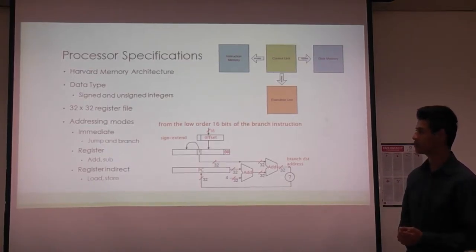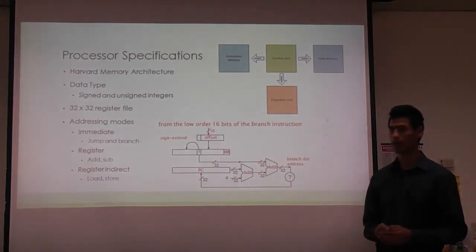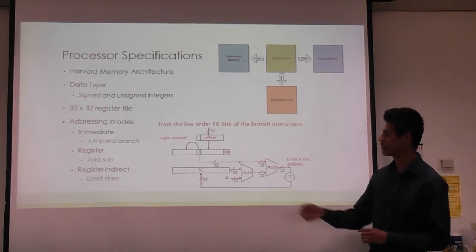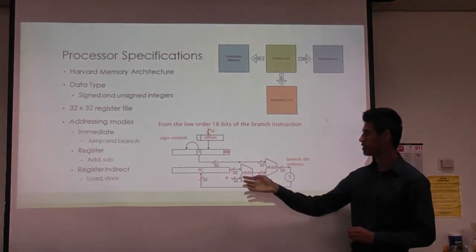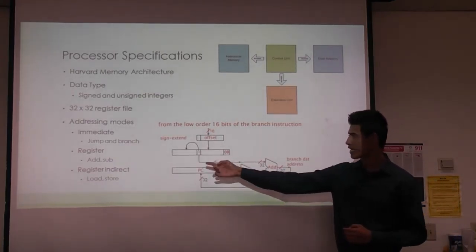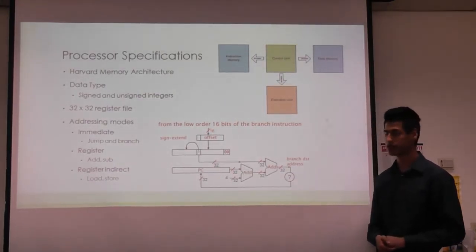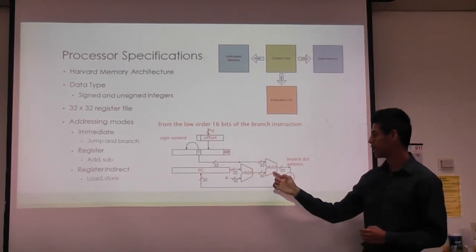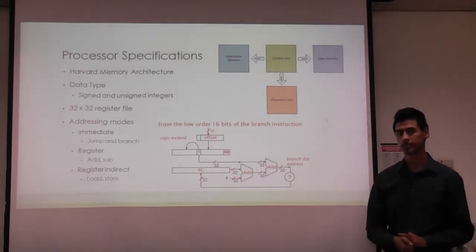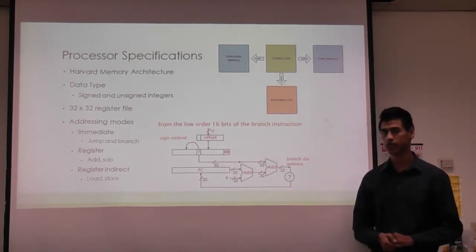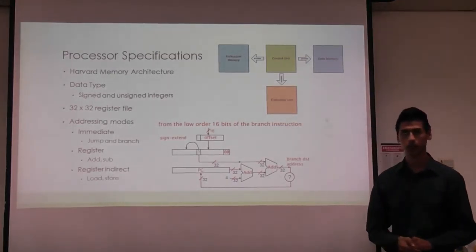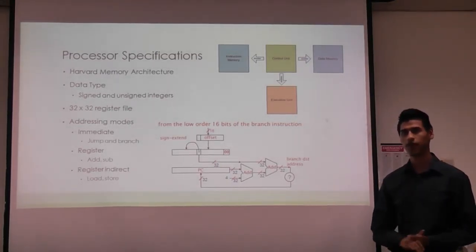In the immediate addressing mode, we embed one of the operands within the instruction itself. For example in the branch instruction, we sign-extend the immediate offset, add two lower zeros at the end, then add that to PC+4. If the branch condition is true, we save that back into the program counter; otherwise the program counter just gets incremented by four.